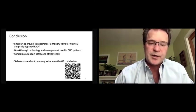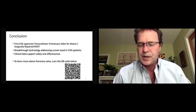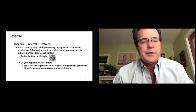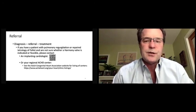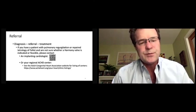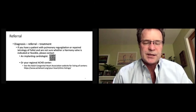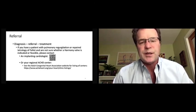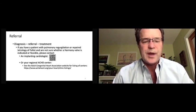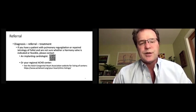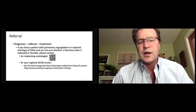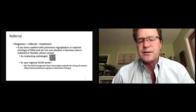If you'd like to learn more about the Harmony valve, you can scan the QR code there, which will take you to the Harmony page on the Medtronic website. If you are not in the congenital field yourself, if you follow patients with pulmonary regurgitation or with repaired tetralogy of Fallot and you're not sure whether a Harmony valve is indicated or feasible, please just reach out. Contact an implanting cardiologist. They will be listed on the Harmony valve website, Medtronic, and this QR code can get there. Or if that doesn't address your area, reach out to your regional adult congenital heart disease center. The adult congenital heart association website provides a listing of centers. Obviously, there's other ways to figure that out as well.